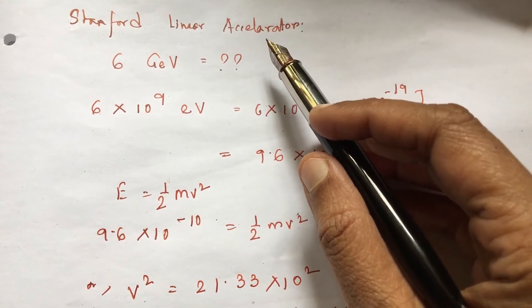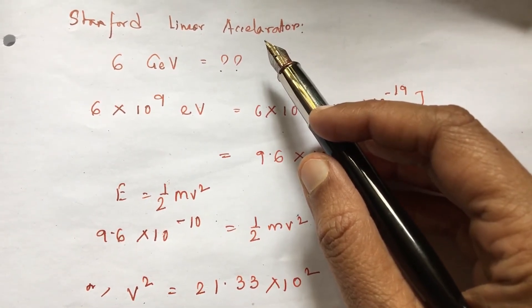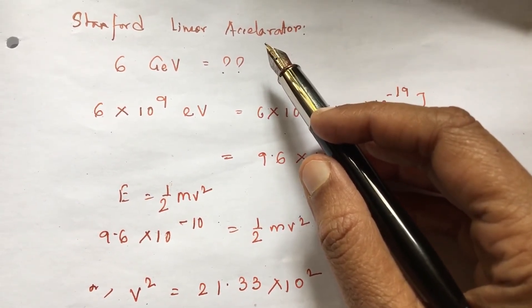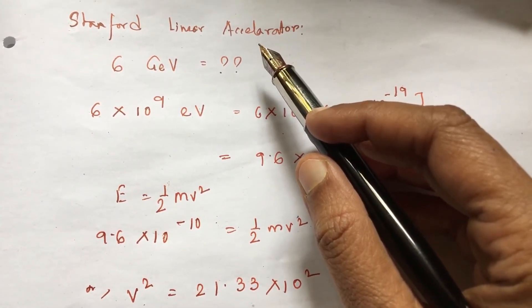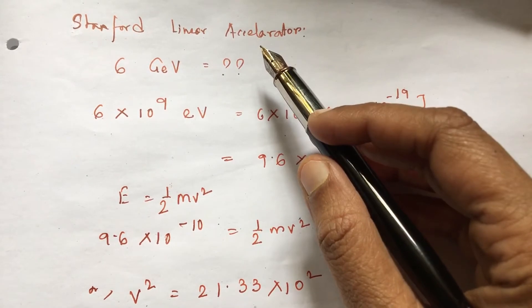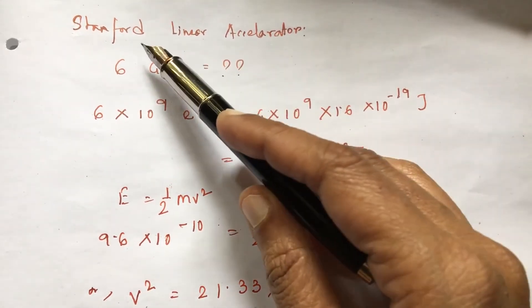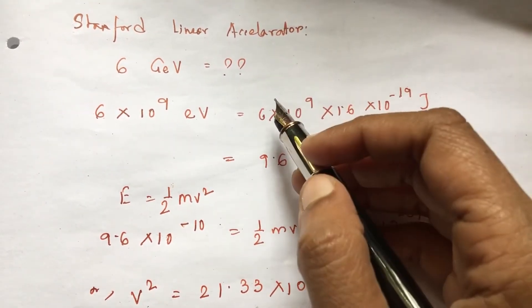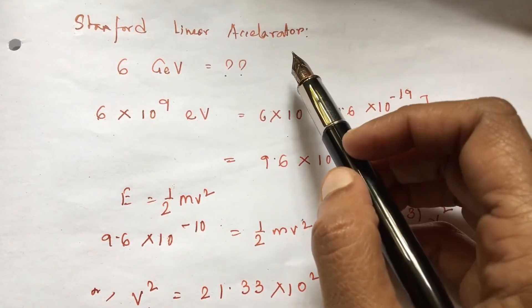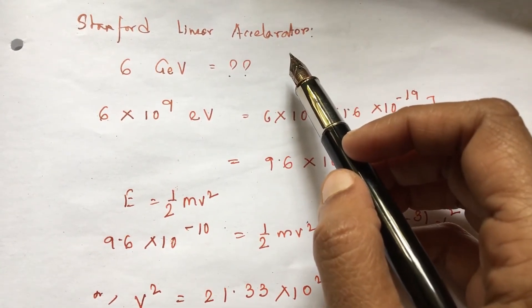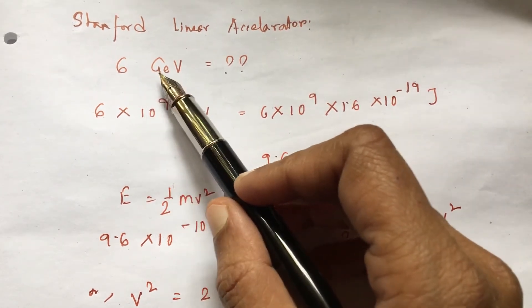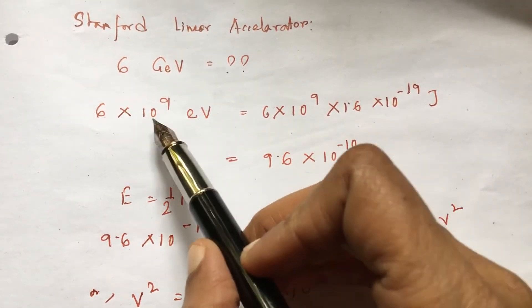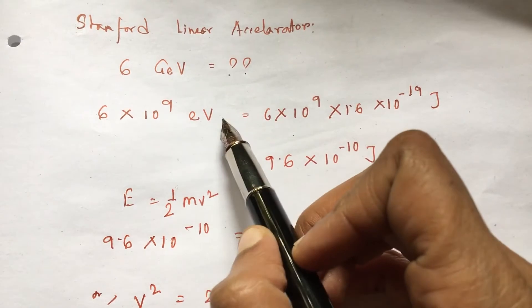So electrons can be used in order to know the internal structure of a nucleus. Electron can be given up to 6 Giga electron volts of energy in Stanford linear accelerator. This is the accelerator center, nuclear physics research here in Europe. This is the electron that we have 6 Giga electron volt. Giga electron volt is 10 to the power 9 electron volt.